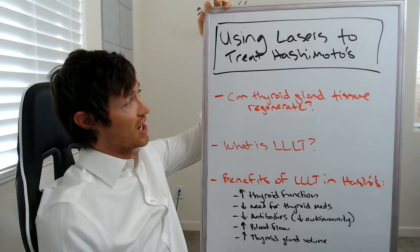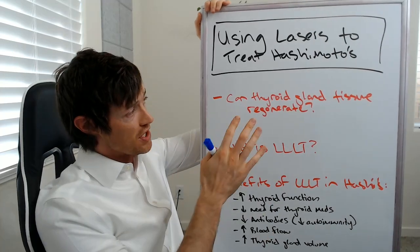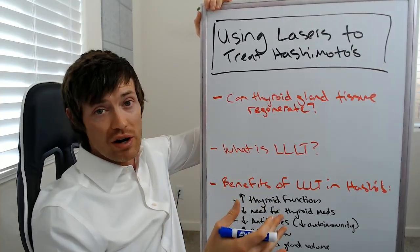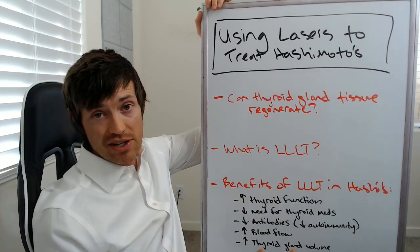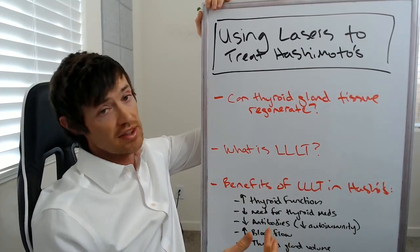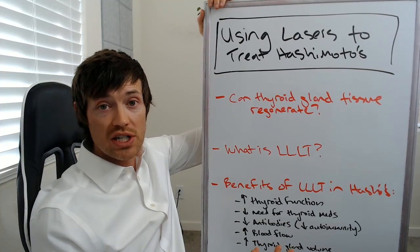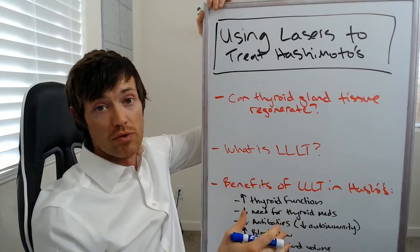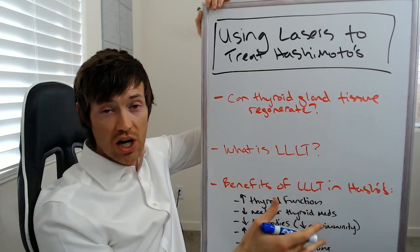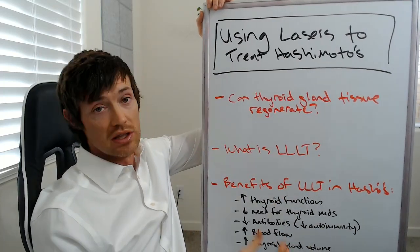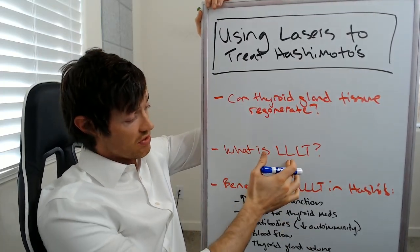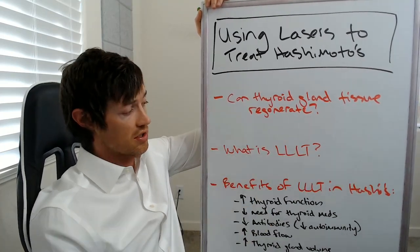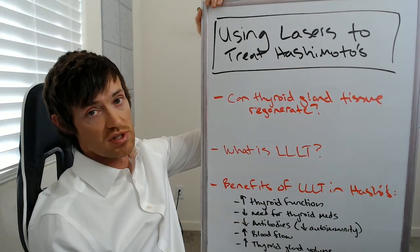Before I jump in, I want to say this isn't some voodoo thing. If you're not already aware, lasers are used in a lot of different areas of medicine. In cosmetic dermatology, CO2 lasers are used. In surgery, we use warm or hot lasers to actually cut through tissue. And then low-level light or low-level laser therapy — which we're going to be talking about in just a second — is used in a lot of other conditions, including some I've used personally in my clinic.